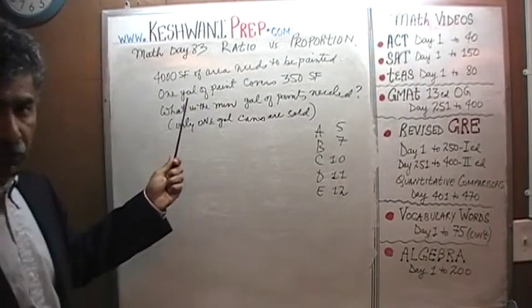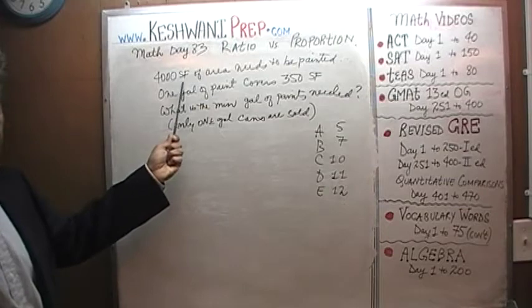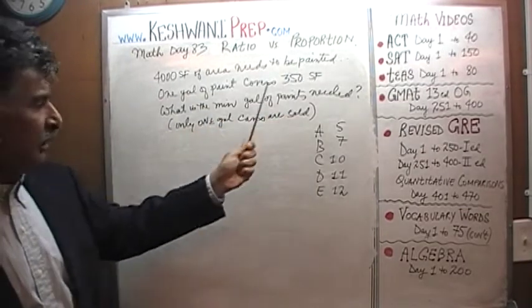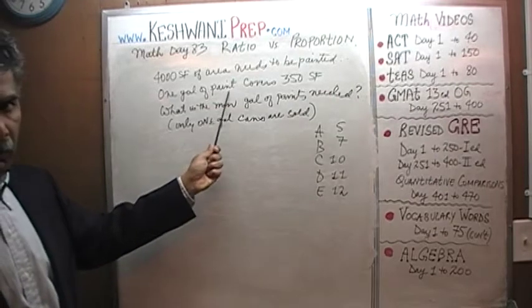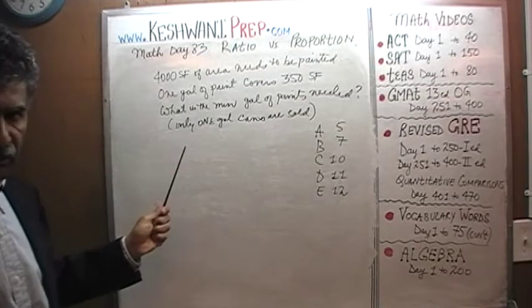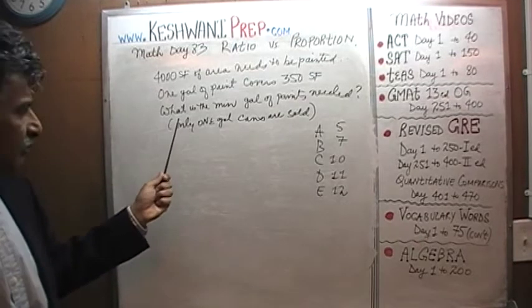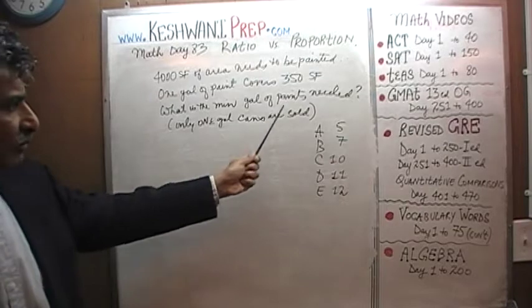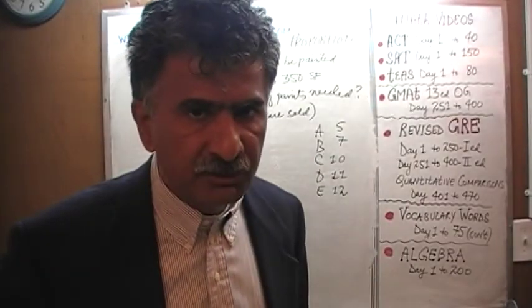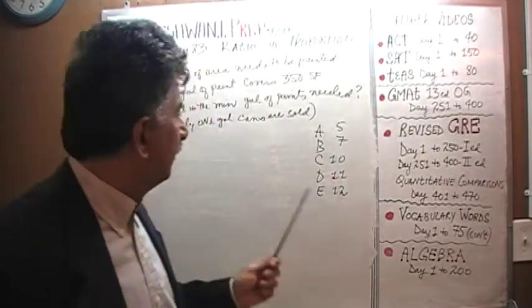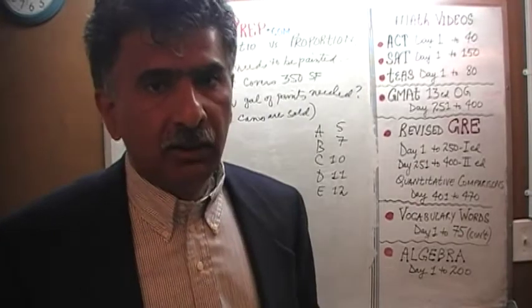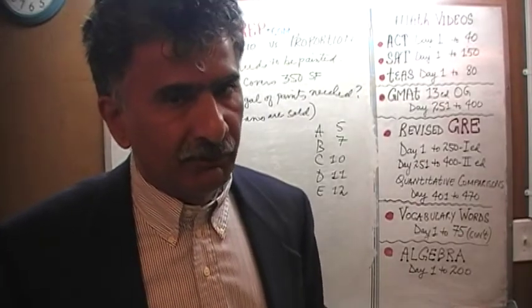We are told that 4,000 square feet of area needs to be painted. One gallon of paint will cover 350 square feet. The question is: what's the minimum number of gallons of paint we need to purchase, given the fact that we can only buy one-gallon cans? We cannot buy half a gallon or a quarter gallon — the paint only comes in one-gallon size.